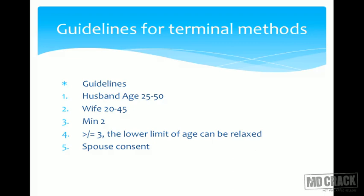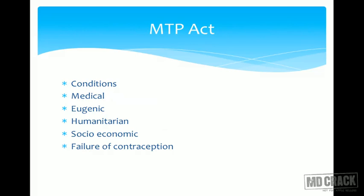These are also called sterilization. Remember, many MCQs ask about methods of spacing — vasectomy, mini-lap operation, or tubal ligation are not methods of spacing. They are methods of terminal sterilization. Therefore, if an MCQ asks which method of spacing has the best success rate and the option is OCP, that will be the answer.